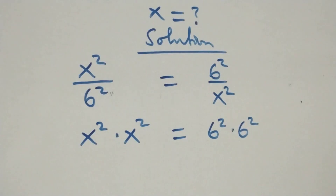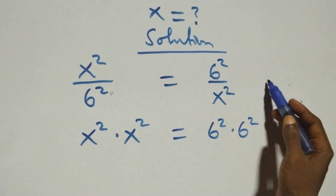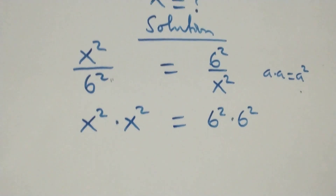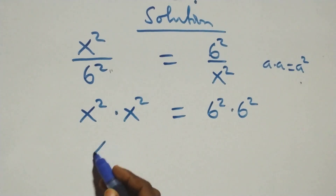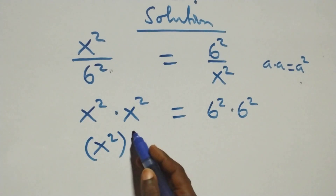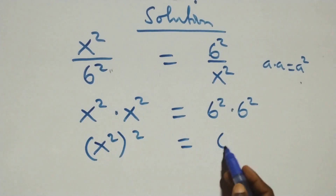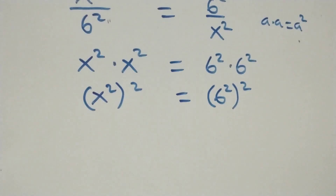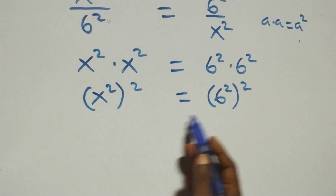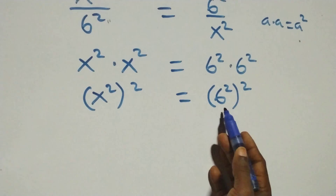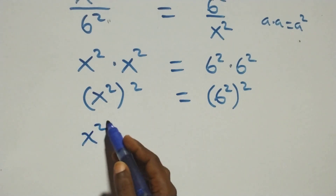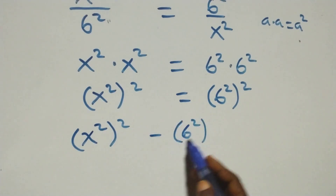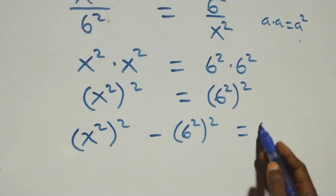This follows from a times a written as a². Applying the same multiplication, we can write (x²)² equals (6²)². The next step is to bring everything to one side: we take the right hand side to the left hand side, giving (x²)² minus (6²)² equals zero.